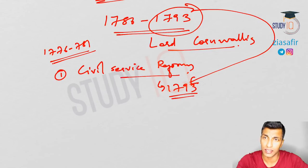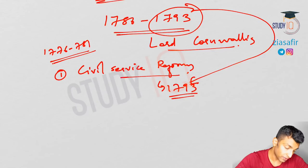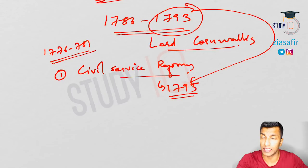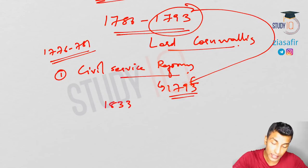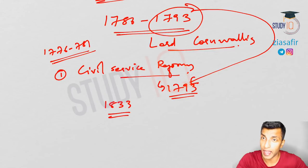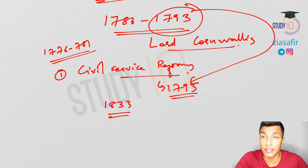This civil service was not based on open competitive examination and it was not for Indians — it was for English only, and the exam was held in England. When we discuss the 1833 Charter Act, there was a provision that no discrimination should be made in the recruitment of civil services on the basis of sex, color, creed, place of birth, etc., which technically allowed Indians to enter.